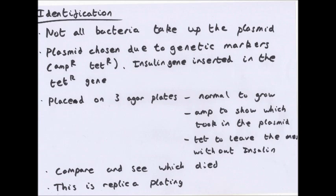So, for example, if you have colonies A, B, C, D, E, F, G, and H on the ampicillin agar, but on the tetracycline plate you only have A, B, C and D - then E, F, G and H must have died. Those ones must have a non-functioning tet-resistant gene, so they must have the human insulin gene - those are the ones you want. You can now identify those colonies, take them and grow them on normal agar on a large scale, and then they will start producing insulin, which you can harvest.